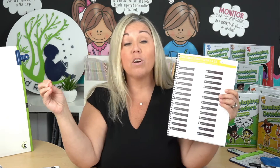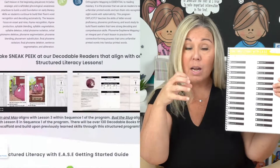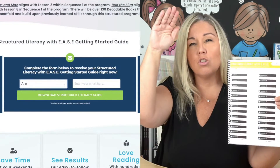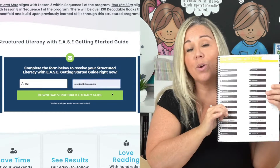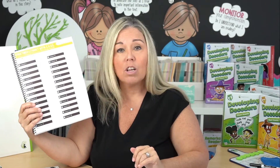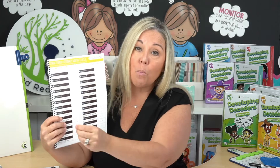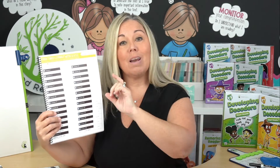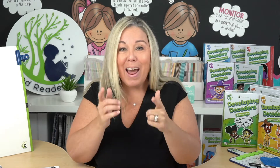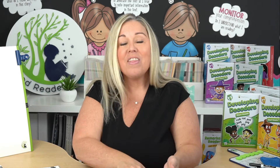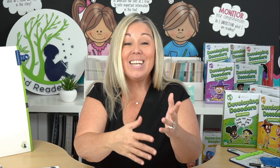If you need a scope and sequence and your district doesn't have one, head over to Guided Readers, scroll down under Structured Literacy with Ease, and download our entire scope and sequence for free. This is going to be a quick video because shift number three is about having a solid scope and sequence that's explicit and systematic. Remember: systematic is the when and the order you teach it. The explicit part is the curriculum itself — the actual lessons.